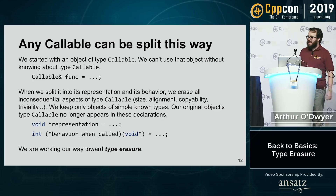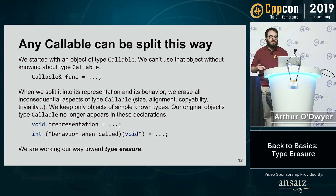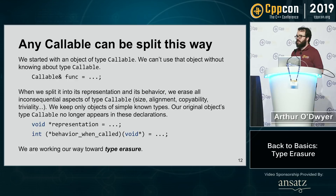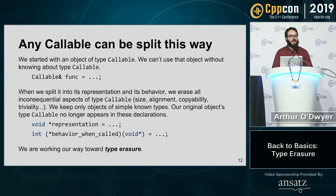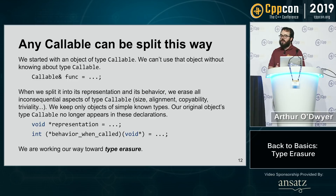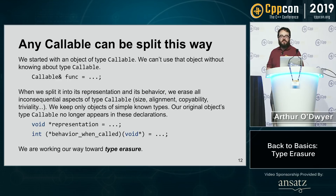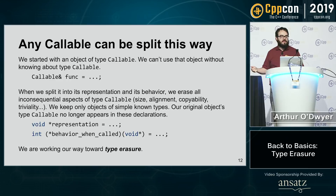We started with an object of type Callable. When we split it into its representation and its behavior, we have erased all the inconsequential aspects of that type. We no longer remember the type's sizeof, alignof, whether it's copyable, trivial, trivially copyable, whether you can negate it or add two of them. All of that type information in C++ is gone. All we remember is its representation and its behavior when called — objects of very simple, trivial types: one is a void star, the other is a function pointer.